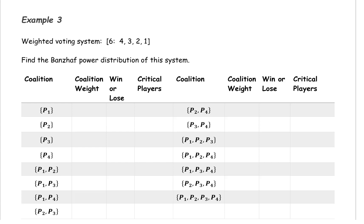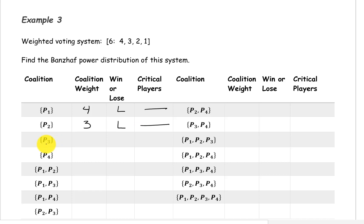The coalition containing only player 1 has a weight of 4 — a losing coalition, so no critical players. The coalition with only player 2 has a weight of 3 — also losing. Player 3 alone has a weight of 2, and player 4 alone has a weight of 1. All single-player coalitions are losing, so we don't need to worry about critical players in any of them.